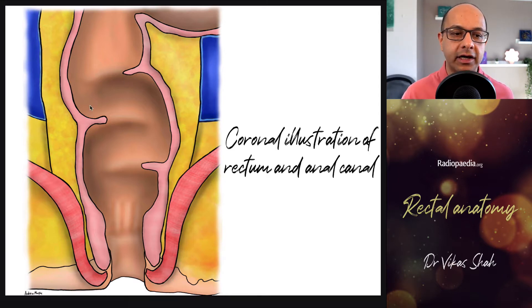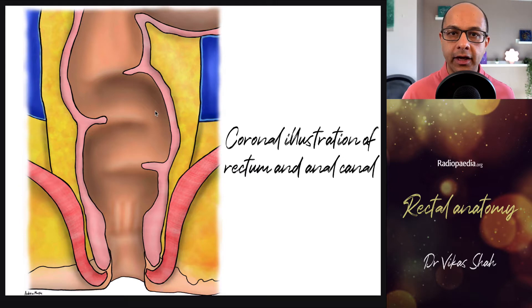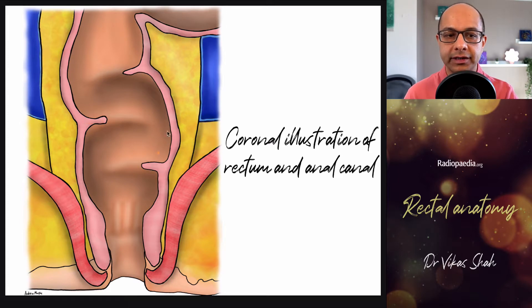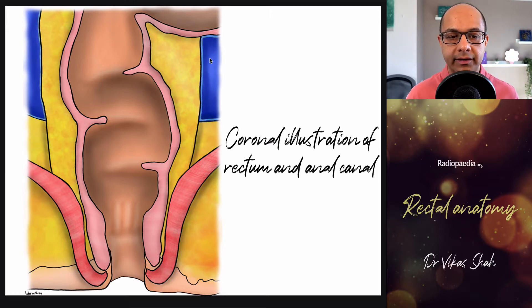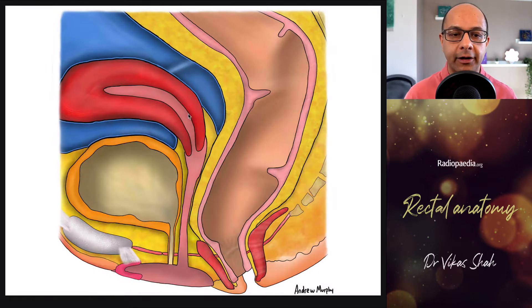Within the mesorectal fat we see nerves, blood vessels, and lymph nodes. Also visible on this coronal view are three lines known as the folds of Houston, which can sometimes be seen on imaging. And this here is the peritoneum — we'll look at the peritoneal reflection in a little more detail shortly.